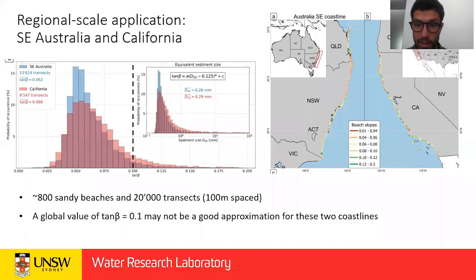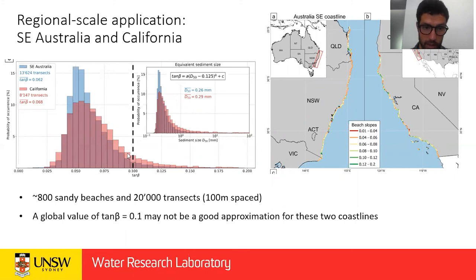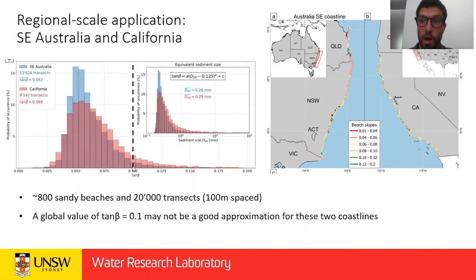After validating this method against field data, we applied it at a regional scale. We mapped satellite-derived beach slopes for the entire southeast coast of Australia and also the California coastline, applying this method at each transect to obtain a distribution of beach face slopes. Both coastlines show a similar distribution with a mean around 0.06, which is much lower than the 0.1 value used in global studies.